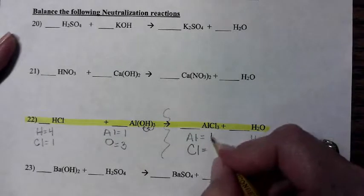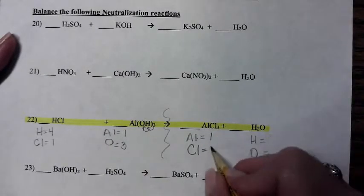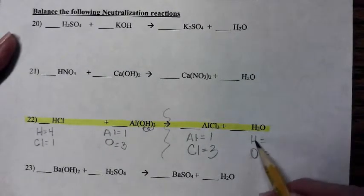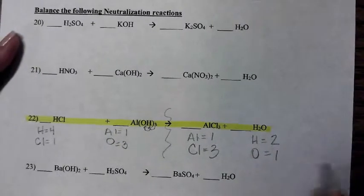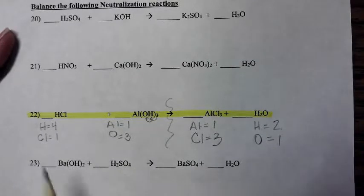So I go over to the product side. List out my elements. Aluminum, chlorine, hydrogen, oxygen. I have one aluminum and three chlorines. Two hydrogens. I can't count. Two hydrogens and one oxygen.